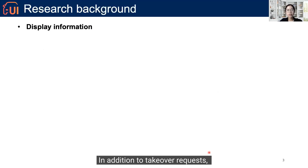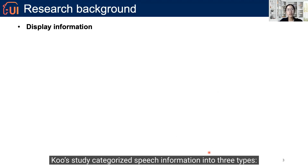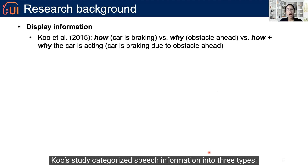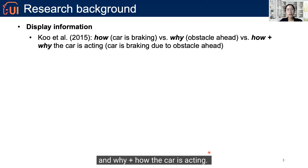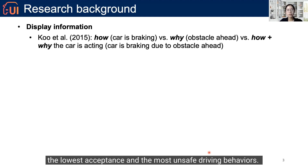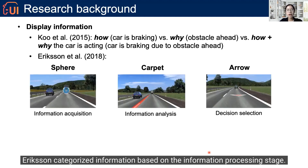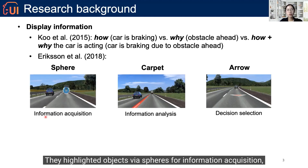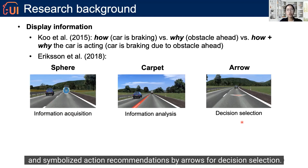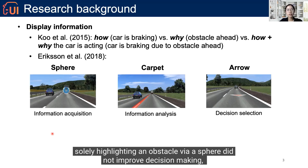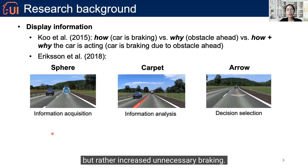In addition to takeover requests, some in-vehicle alert systems provide event-related information to potentially support the driver's takeover. Prior studies categorize speech information into three types: how the car is acting, why the car is acting, and why plus how the car is acting. They found that how-only information led to the lowest acceptance and the most unsafe driving behaviors. Ericsson categorized information based on the information processing stage — highlighting objects via spheres for information acquisition, indicating lane availability via carpets for information analysis, and symbolizing action recommendations by arrows for decision selection. Their results showed that solely highlighting an obstacle with a sphere didn't improve decision making, but rather increased unnecessary braking.